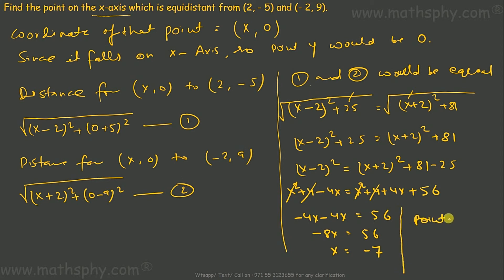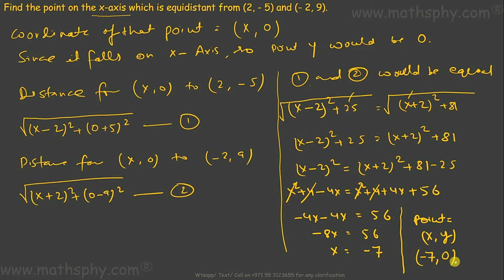So the required point is here. The point equidistant from (2, -5) and (-2, 9) has x equal to negative 7, and since it falls on the x-axis, y equals 0. So the answer is (-7, 0).